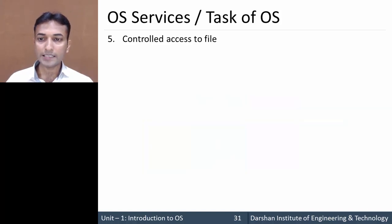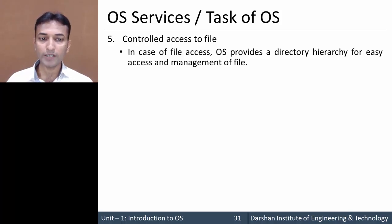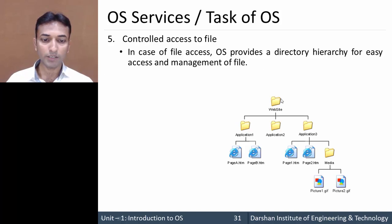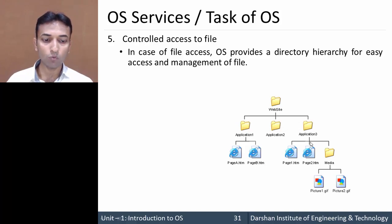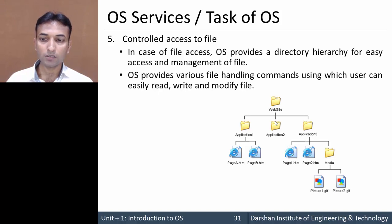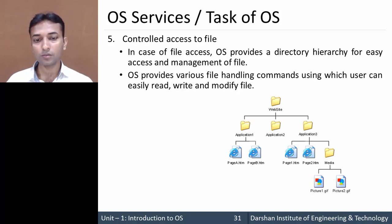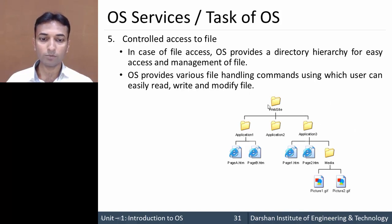Next is control access to files. The OS provides a directory hierarchy for easy access and management of files. For example, a root directory called 'website' may contain subdirectories like application one, application two, and application three, each with files such as page_a.htm and page_b.htm, and further subdirectories like 'media'. The OS provides various file-handling commands so users can read, write, and modify files within this directory structure.